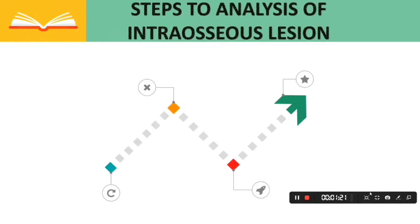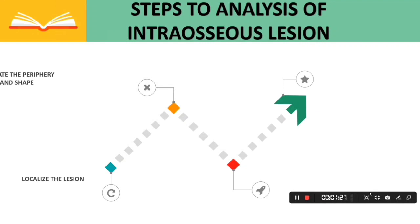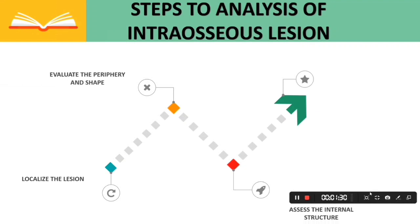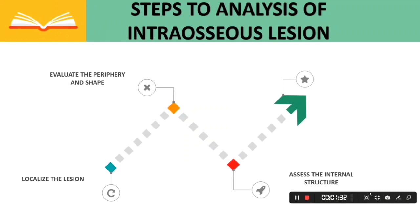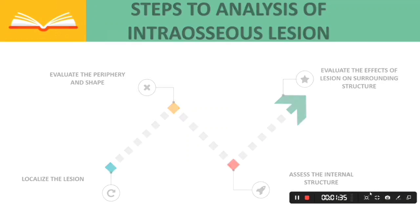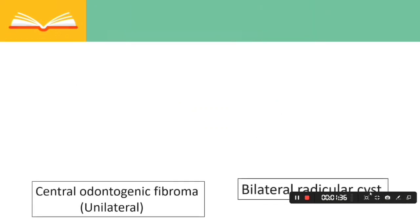Fourth, examine the alveolar process. Steps to analysis of intraosseous lesions: first, localize the lesion; second, evaluate the periphery and shape of the lesion; third, assess the internal structure of the lesion; and fourth, evaluate the effects of the lesion on the surrounding structures.